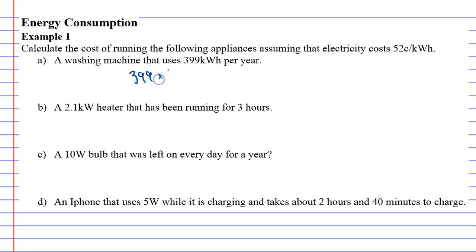All we do is take the 399 and multiply it by 0.52. We want to put it in dollars, makes your life a lot easier. So 399 times 0.52 is $207.48. If you always use warm wash on your washing machine, it's going to cost you about $200 over a year's time.